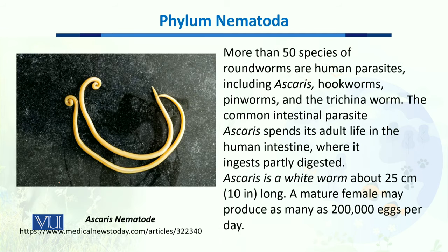More than 50 species of nematodes, or roundworms, are human parasites. This includes Ascaris — you can see this one present in the intestine as a parasite of humans — and we also have hookworms, pinworms, and trichina worms.